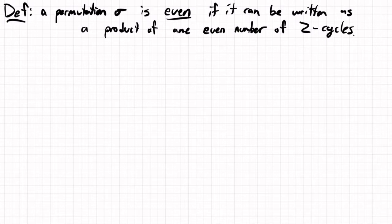And likewise, a permutation is odd if it can be written as a product of an odd number of two-cycles.